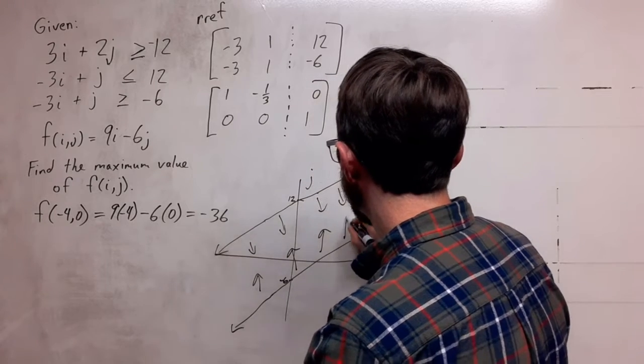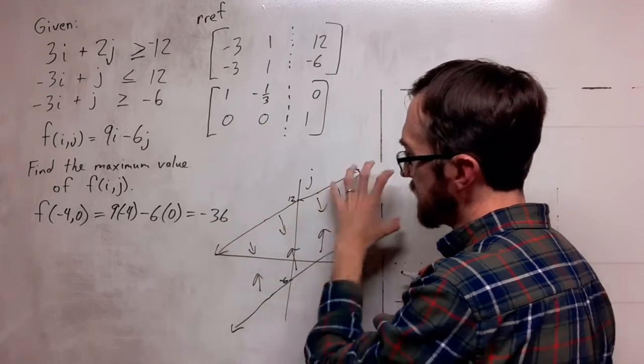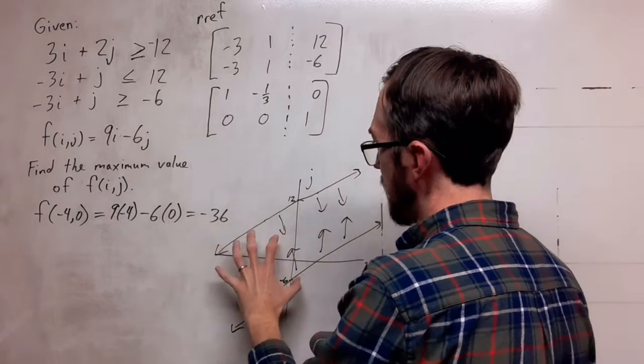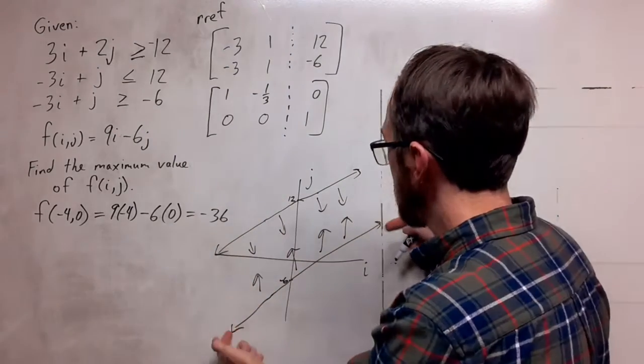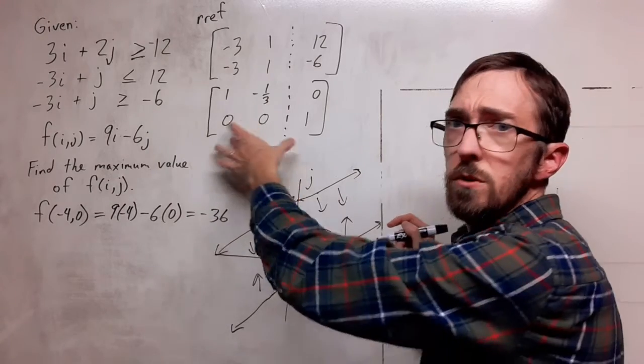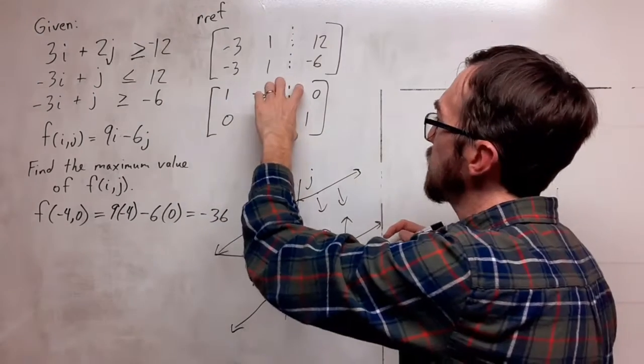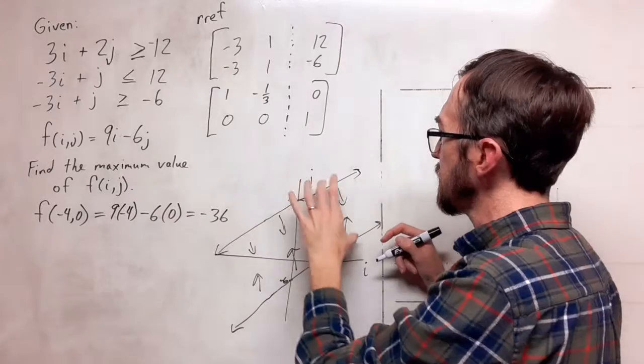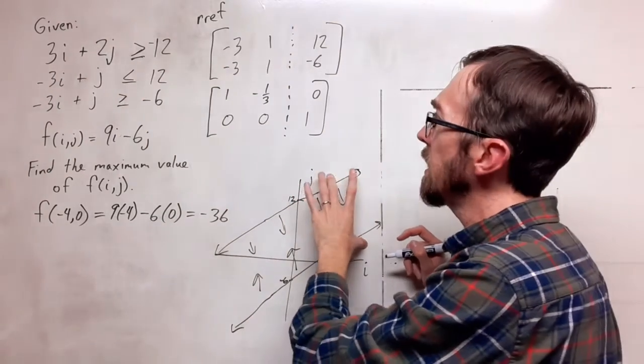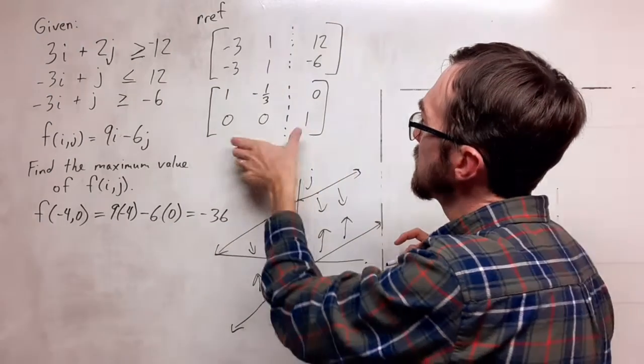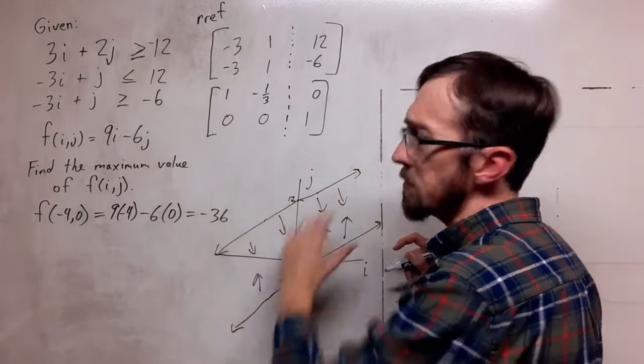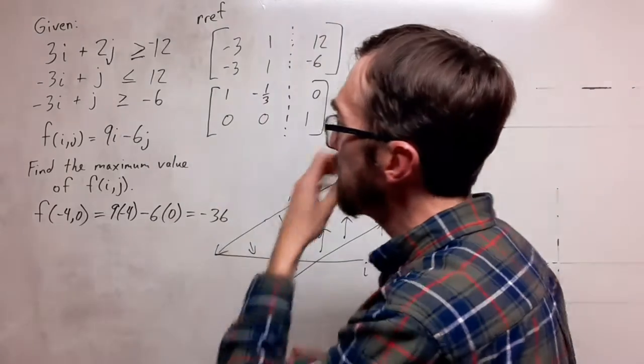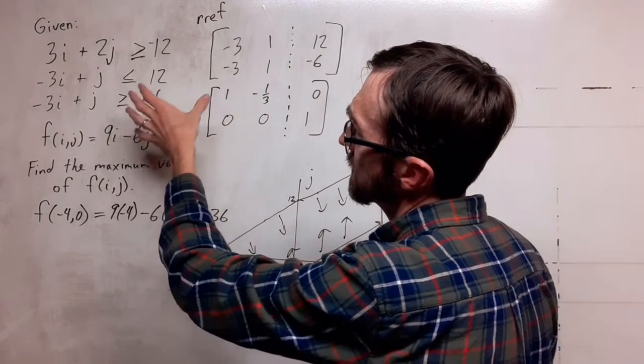So I have a feasible region. I have this double overlap right here, but there's no intersection between these lines. And so this matrix is not going to reveal an i and a j because the i and j is interpreted as the intersection of the two lines. There is no intersection to be found with this because of having parallels.